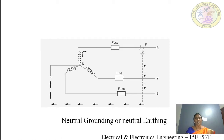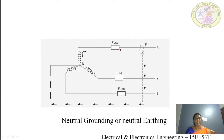Consider the figure shown here. There is a fault on the R phase — that is a single line to ground fault. Because of this fault, and because this is a neutral earthed system, the fault takes a path as shown by the arrow in the figure. It will flow through the fuse connected to the R phase. Therefore, the fuse connected to the R phase will blow out.